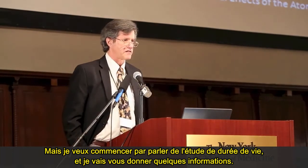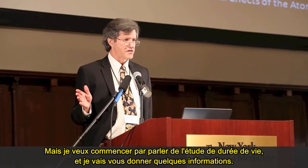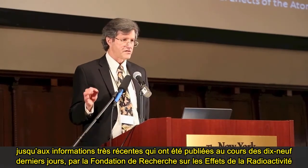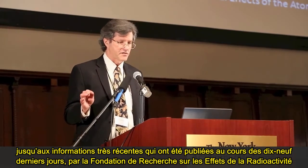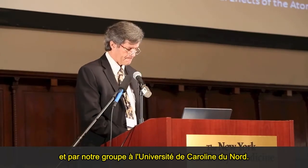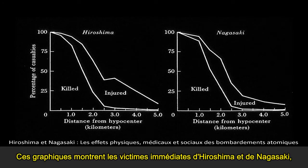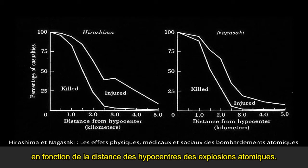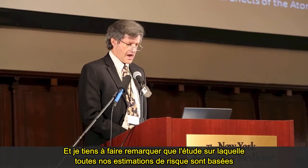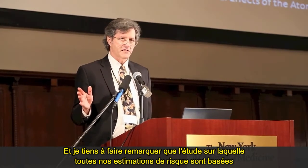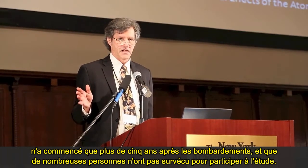I want to start by talking about the lifespan study. I'll show you information from a volume that came out in the 1970s, as well as very recent information from the Radiation Effects Research Foundation and from our group at the University of North Carolina. These graphs show the immediate casualties at Hiroshima and Nagasaki. The key point is that the study upon which all our risk estimates are based did not begin until more than five years after the bombings.